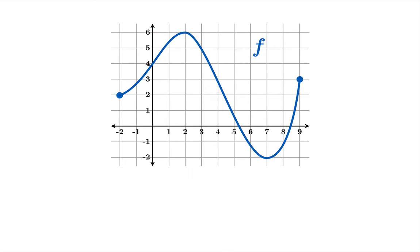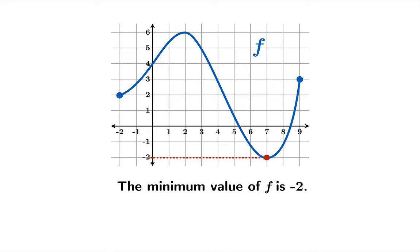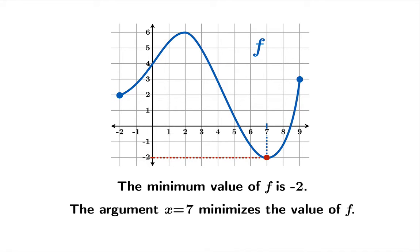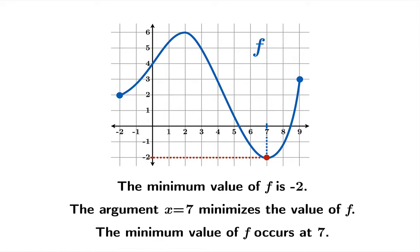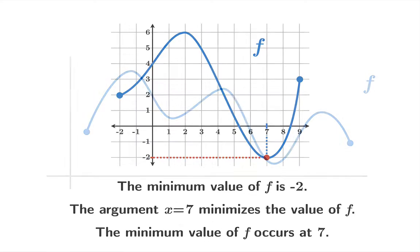Similarly, you can play the same game with minimum values. The minimum value of f in this example is negative 2, but the argument that minimizes the value of f is 7, or the minimum value of f occurs at 7.